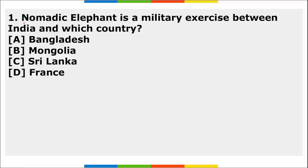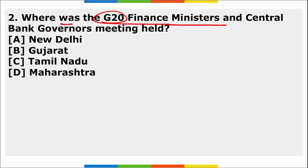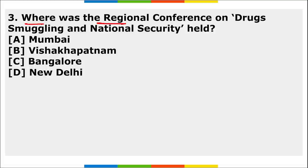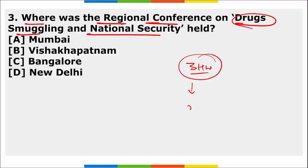Homework questions: First, Nomadic Elephant is a military exercise held between India and which country? Second, where was the G20 Finance Ministers and Central Bank Governors Meeting held? Third, where was the Regional Conference on Drug Smuggling and National Security held? I want maximum participation from students in these homework questions — please comment below as this will help in your preparation.